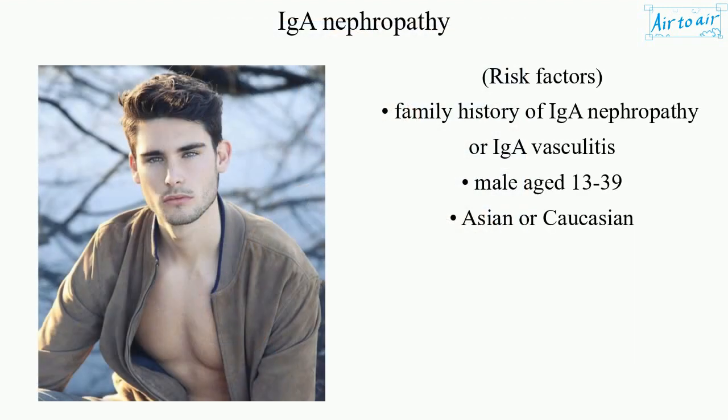Risk factors. Family history of IgA nephropathy or IgA vasculitis. Male aged 13–39, Asian or Caucasian.